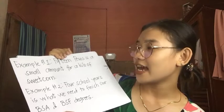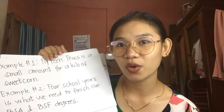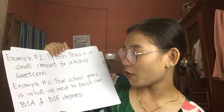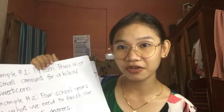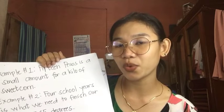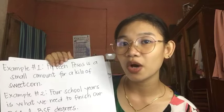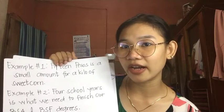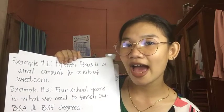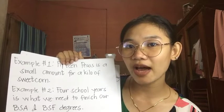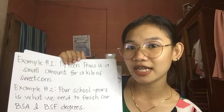Rule number thirteen: units such as amount, size, time, quantities, or distance always require a singular verb. For example, 'Fifty pesos is a small amount for a kilo of sweet corn.' Second example: 'Four school years is what we need to finish our BSA and BSF degree.' In both examples, we are using a unit to identify the subject, which requires a singular verb 'is,' as each example has a singular subject — 'fifty pesos' and 'four years.'